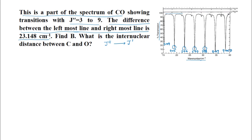Continuing: transitions from 6 to 7, 7 to 8, 8 to 9, and the rightmost line is 23.148 wave numbers. Let us try to see the rotational spectrum — the first line, which is the 0 to 1 line, comes at 2B, then we have the 1 to 2 transition at 4B, 2 to 3 transition at 6B, and 3 to 4 transition at 8B. So the leftmost line in this spectrum is actually the fourth line in the rotational spectrum.